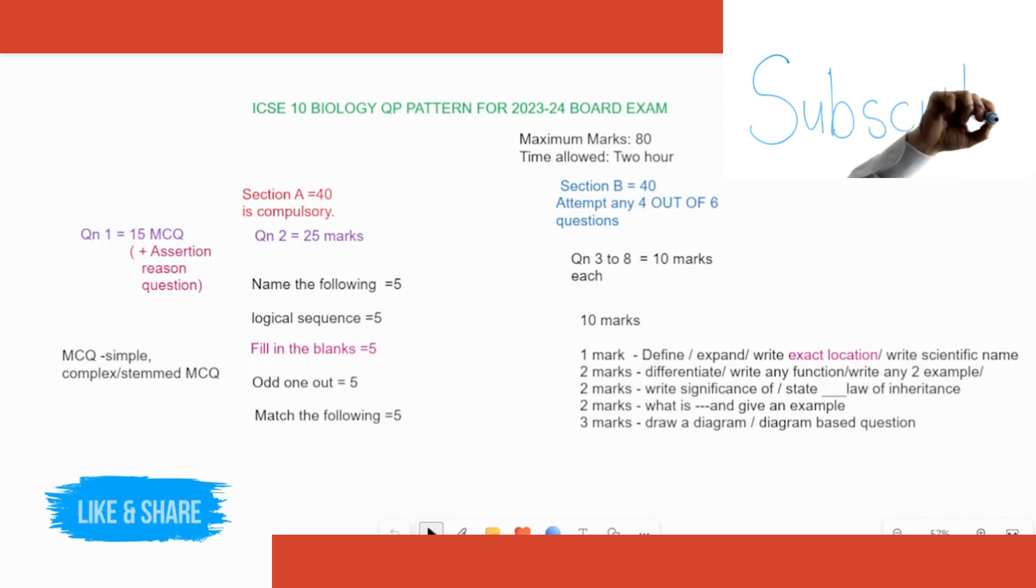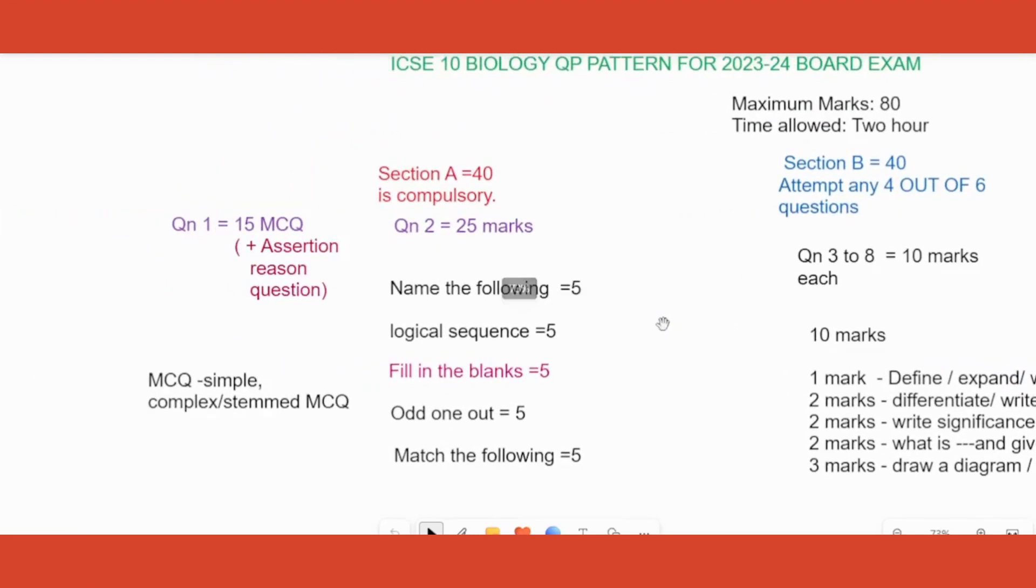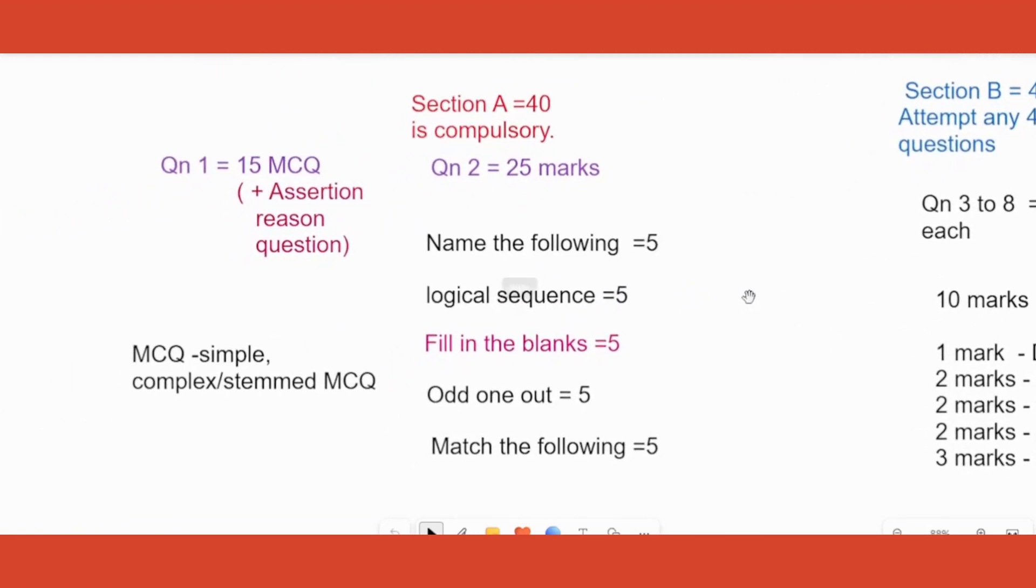Coming to the pattern of the question paper, it is an 80 mark paper and gives you two hours to complete. It is divided into Section A which is 40 marks and Section B that is 40 marks again. Section A 40 mark part is what we should analyze properly, and this is a 40 marker which is compulsory - you don't get any options under this part.